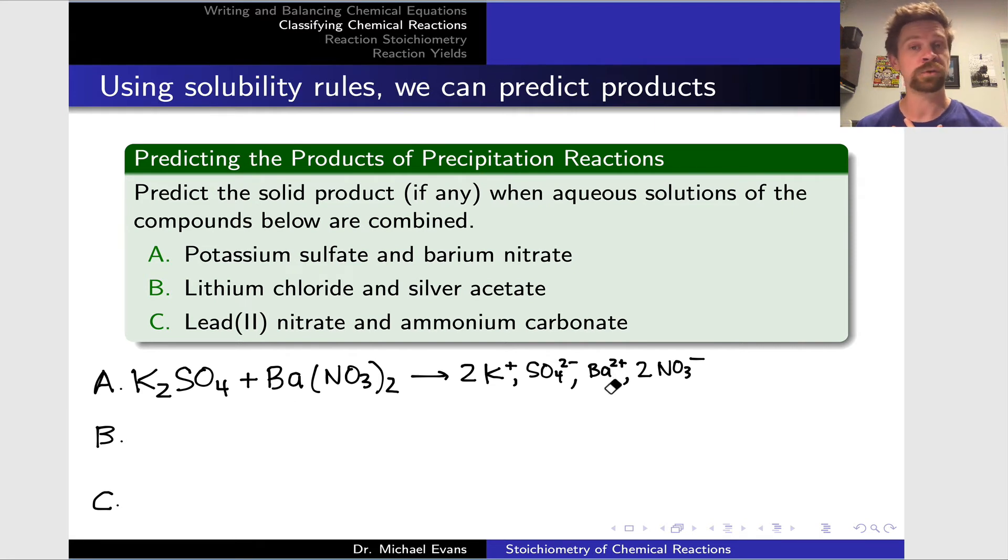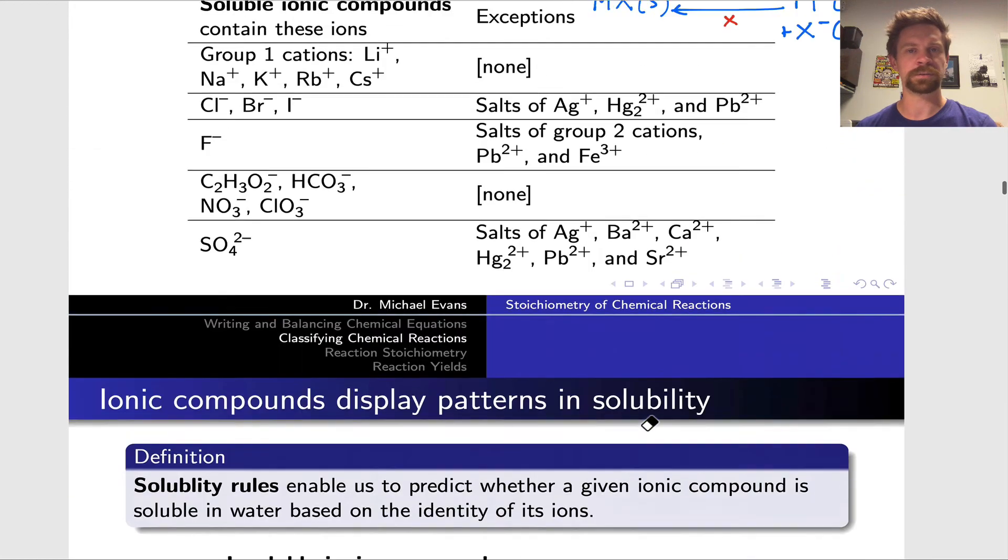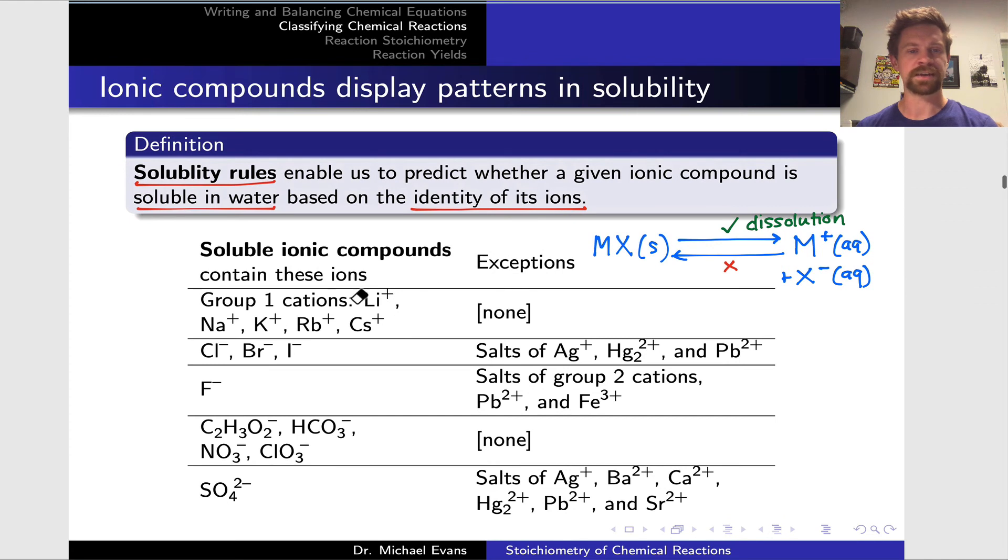Ba(NO3)2 is one Ba2+ and two NO3-. Now, in essence, to predict whether a precipitate will form, what we need to do is switch the ions, switch the positions of the ions so that, for example, the sulfate anion gets together with Ba2+ and the NO3- anion gets together with K+ and ask whether any of those pairs after the switch form an insoluble salt. In this first case, K+ is a group one cation and the vast majority of salts of group one cations are soluble. We can see that here. Absolutely no exceptions. So K+ is absolutely not precipitating out.